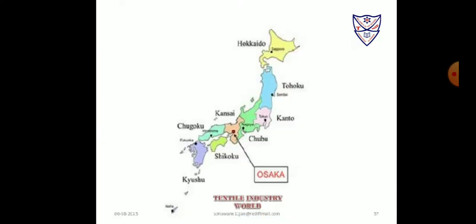Osaka is the Manchester of Japan and an important textile centre of Japan. The textile industry in Osaka developed due to several geographical factors: sufficient water available through the river Yodo, easy availability of labour, and port facilities for importing raw materials and exporting textiles. Later, the cotton textiles of Osaka were replaced by other industries like iron and steel, machinery, and shipbuilding.